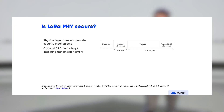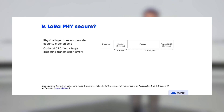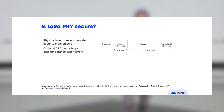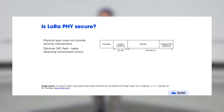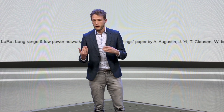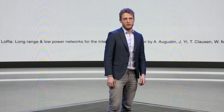A few things on LoRaWAN security. First, the physical layer — LoRa does not provide any security. Even though you can use LoRa chips and LoRa concentrators to communicate over long range and get all those benefits, it doesn't provide any security mechanism. It only contains a checksum, a CRC, to detect if any bits have been flipped. Any other security mechanisms are not provided by the physical layer.